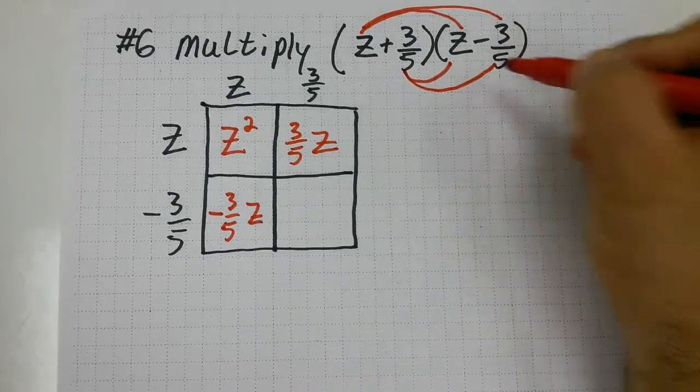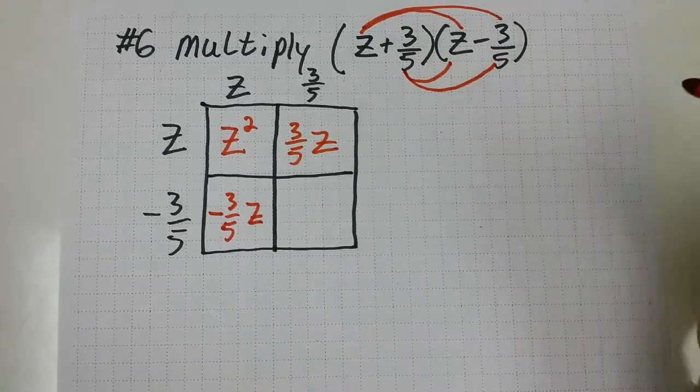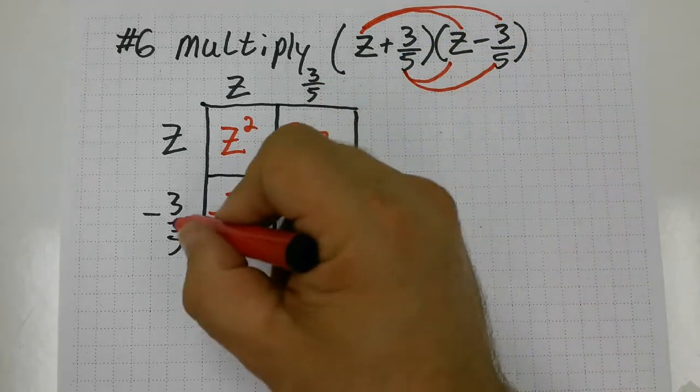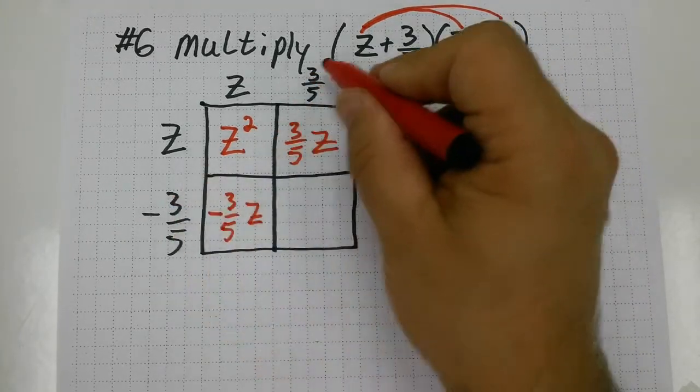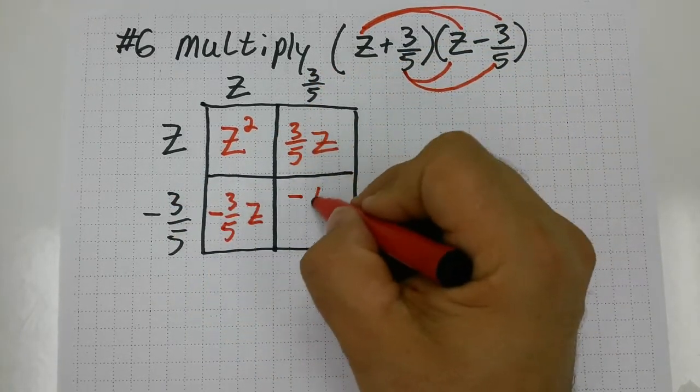And then my last. That would be 3 fifths times negative 3 fifths. So negative 3 times negative 3. That's negative 9.